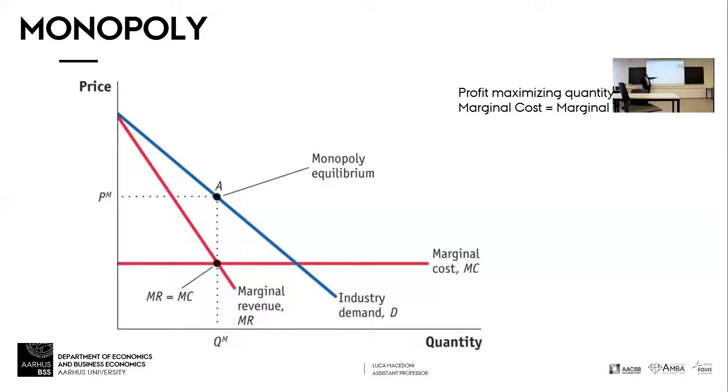So the equilibrium is where you produce QM, and you go back up to the demand curve at point A — and that's the price that you choose, PM.